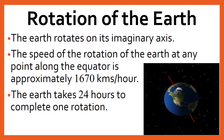Students, just as a top rotates on its axis, in the same way the earth also rotates on its axis, from west to east direction. This circular motion of the earth is called daily motion. It is also called the rotation of the earth. The speed of rotation at any point along the equator is approximately 1670 kilometers per hour.